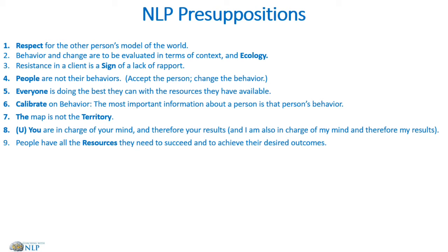Next: people have all the resources they need to succeed and achieve the desired outcomes. There are no unresourceful people, only unresourceful states. We have the ability to succeed and all the resources we need — it just means sometimes we need to get in touch with those resources, or sometimes we might need to learn a few additional skills. It's a really useful belief because it means there's no limitation regarding what a person can achieve or even learn.